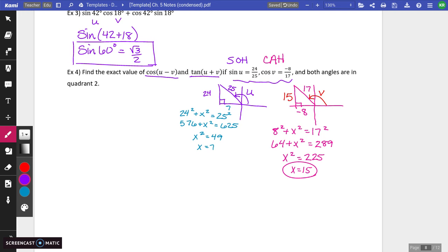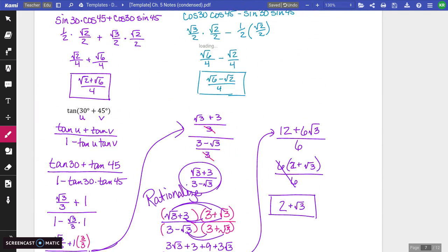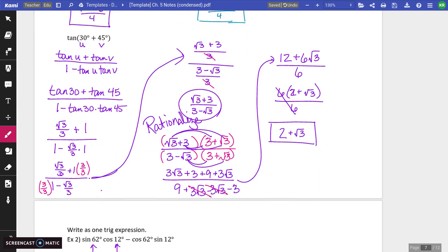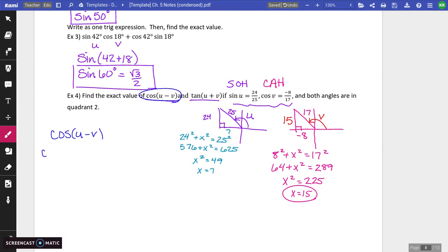Okay, so if we're going to find the cosine of U minus V. All right, so we're going to do cosine of U minus V. So let's go back up to our patterns here. So cosine of U minus V is cosine U times cosine V plus sine U times sine V.